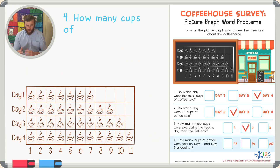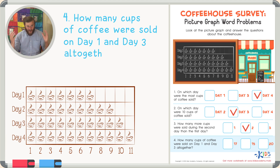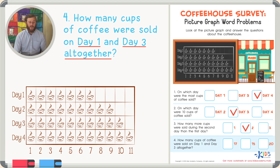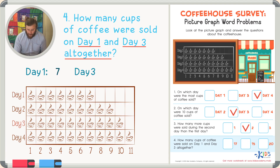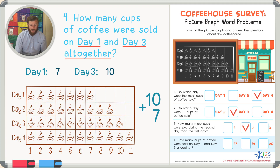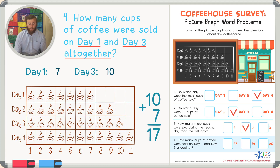Final question: how many cups were sold on day one and day three all together? 'All together' means we're adding. Day one had seven cups and day three had ten cups. So we add 10 plus 7: line up the seven in the ones place — zero plus seven is seven, one plus nothing is one — that gives us 17. On day one and day three all together there were 17 cups of coffee sold. Let's check 17.